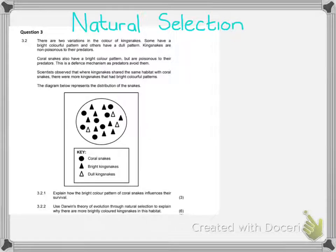And you just have to know your natural selection work really well so that you can apply it to any example. So it's really important to familiarize ourselves with the introductory paragraph. It says that there are two variations of color in kingsnakes. Some have a bright colorful pattern, others have a dull.